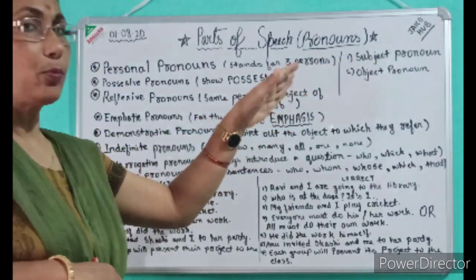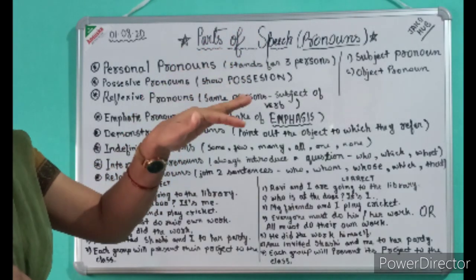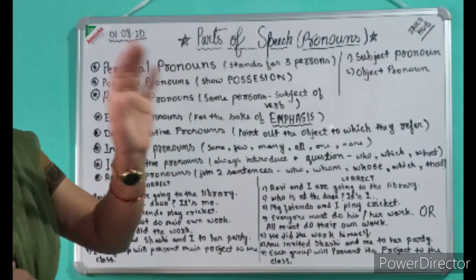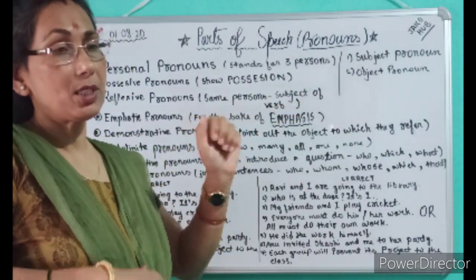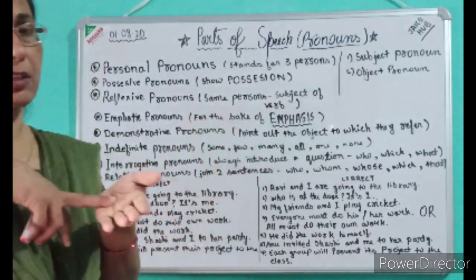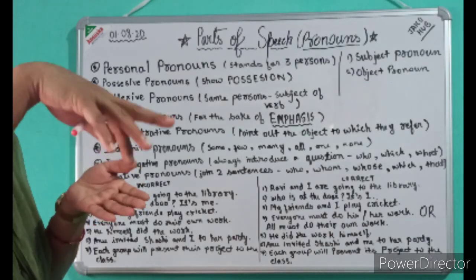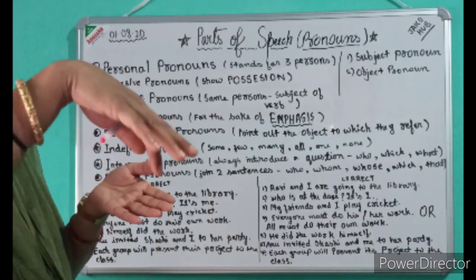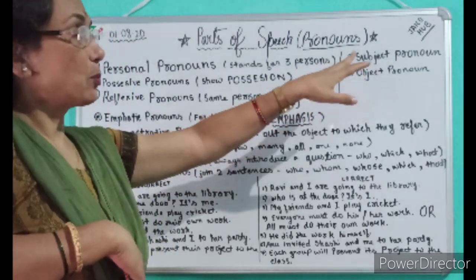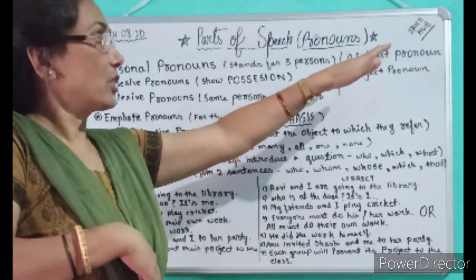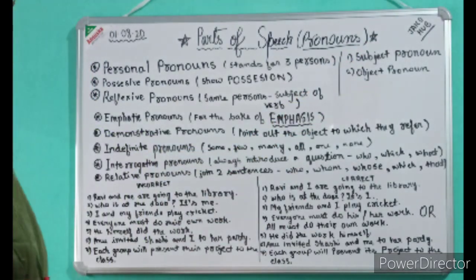This is the book she used to read in her class. Here, 'her' is the object pronoun because 'her' has come as the object. This is the book which she read in her class. So, subject pronoun refers to the subject and object pronoun refers to the object.